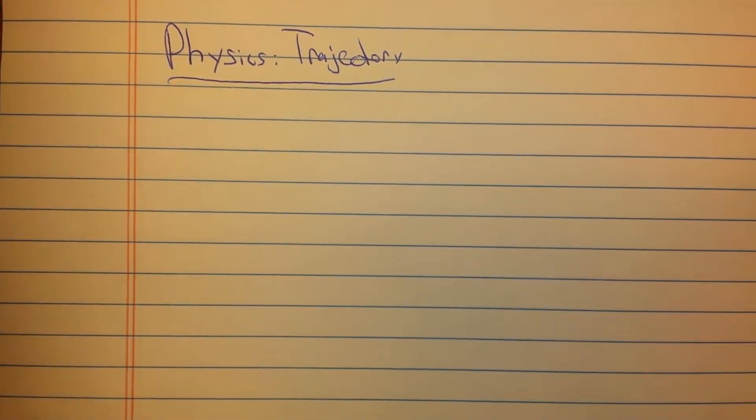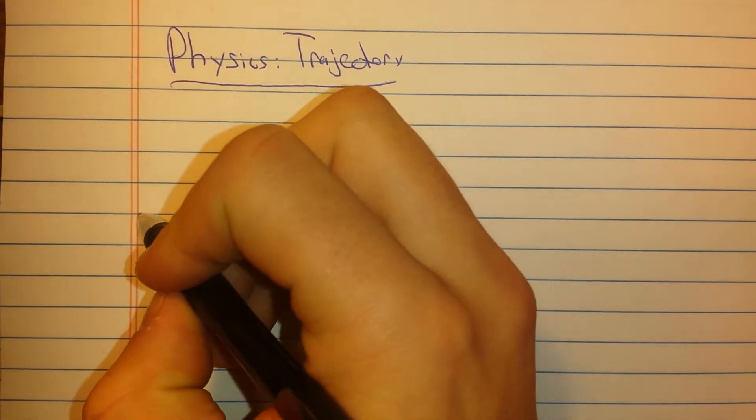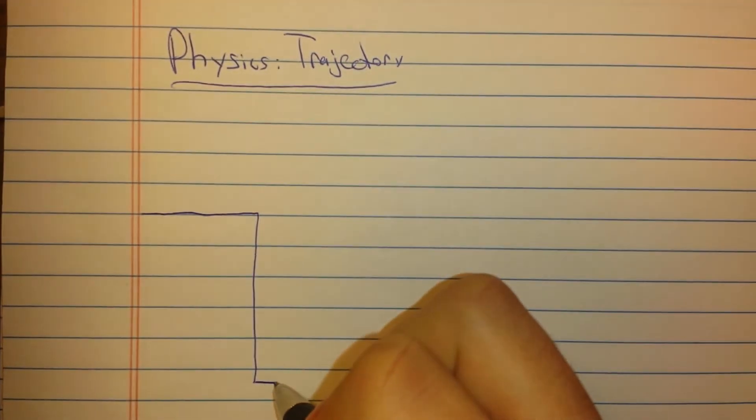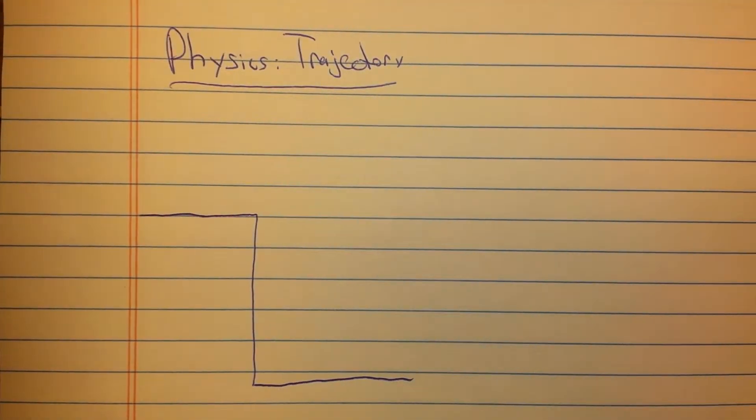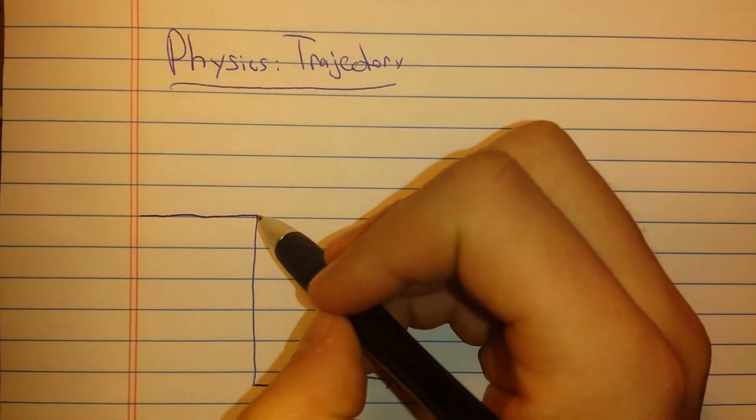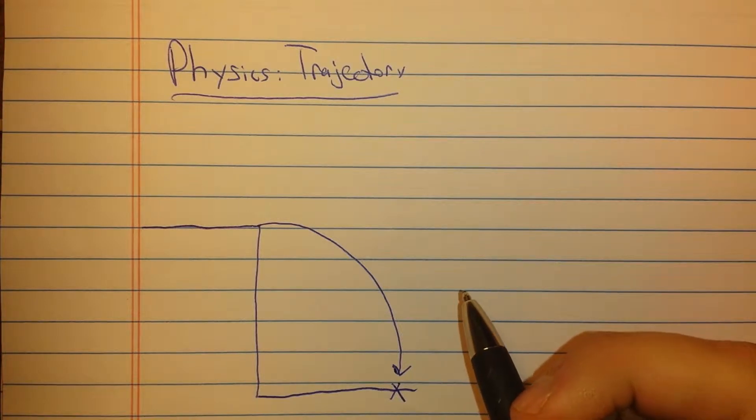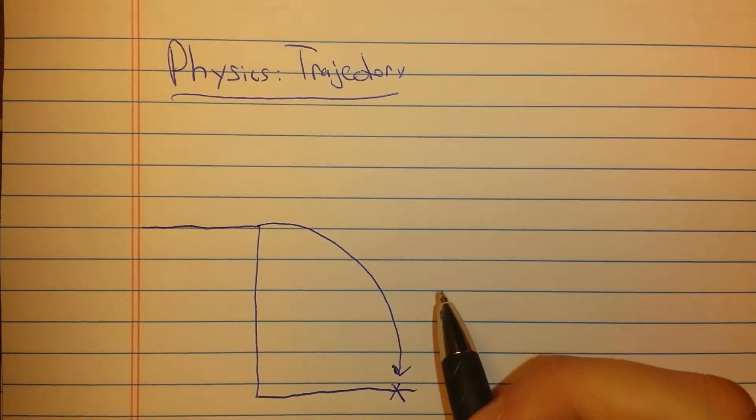Okay, for this physics problem we're going to do the trajectory of a marble rolling off the edge of a table. And what we hope to find out is how far it hits away from the table and how long it takes to land when it hits away from the table.